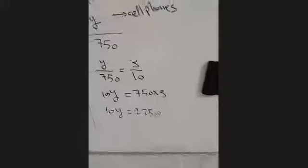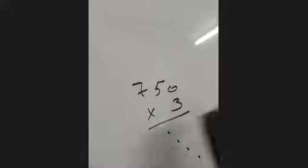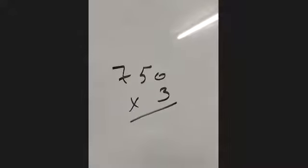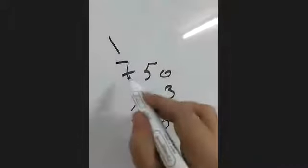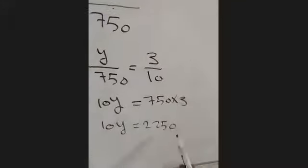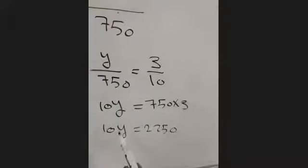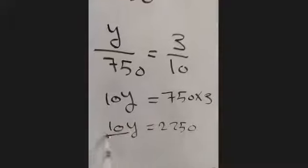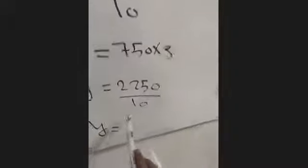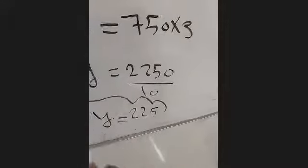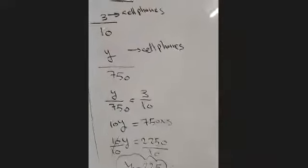750 multiply 3: let me check — 3 by 0 is 0, 3 by 5 is 15, 3 by 7 is 21 plus 1. So 750 multiply 3 is 2250. Now I need to find the value of y: divide both sides by the number beside the variable. Cross the zeros — y equals 225 students should be using their cell phone out of 750.